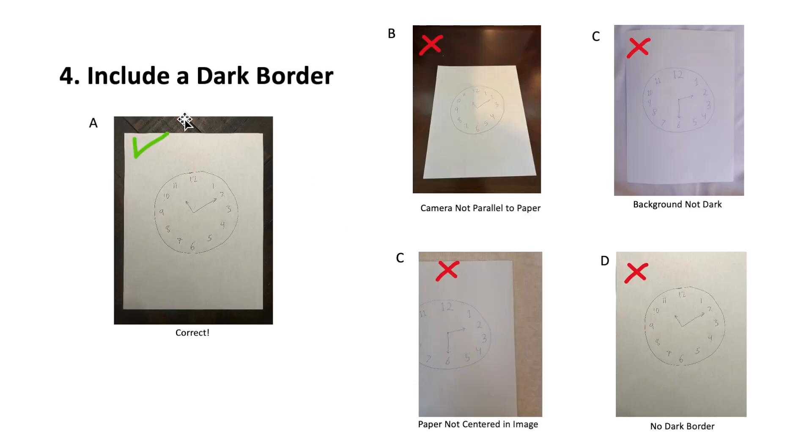Mistake number four is forgetting to include a dark border. Panel A shows you the correct way to photograph your clock. Make sure the camera is parallel to the piece of paper. Panel C shows the mistake of having a light border. The border should be dark, just like in panel A.